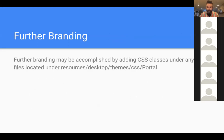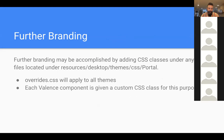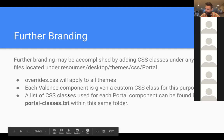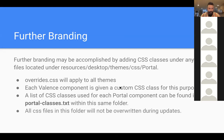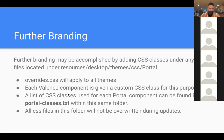The other thing we'll cover is the overrides CSS file. In the resources/desktop/themes/CSS/portal folder there's a file called overrides.css — this is for you to add your own custom CSS. Every Valence component we create in the portal has a unique CSS class so you can override them. The full list of classes for each portal component can be found in portal_classes.txt in that same folder. And like hook.js, this will not be overridden during updates.